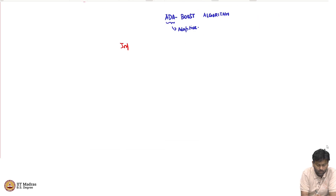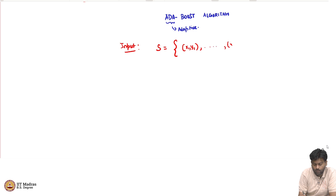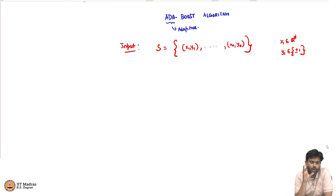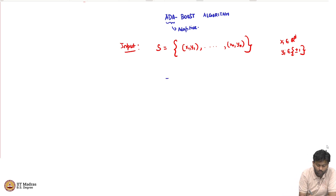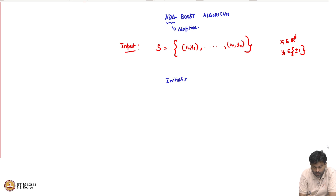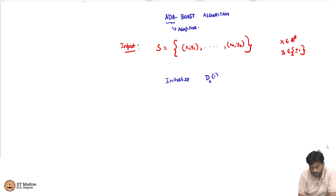As usual, the input to the algorithm is a dataset S = {(x_1, y_1), ..., (x_n, y_n)}, where x_i is in R^d and y_i is plus or minus 1. The main idea is we are going to replace the two steps of bagging with more principled steps. In bagging, the first step was to create bags by uniformly sampling with replacement. Here, we are going to think in terms of weights associated with each data point. We initialize the weights as d_0(i) = 1/n — a uniform weight for every data point.